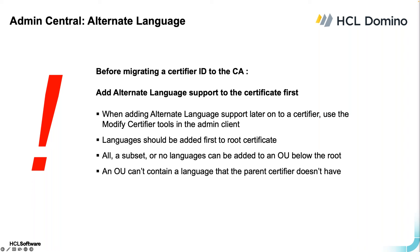The caveats for alternate language support: you should add all the languages your organization will support to the root cert first, then you can choose any subset for any OU below that, but an OU can't contain a language that the parent cert does not have. We don't have a demo for this because setting up alternate language support is independent from setting up the CA, and customers either already have it or clearly know they don't need it. The previous slide had a link to that specific documentation.